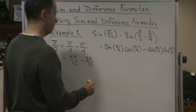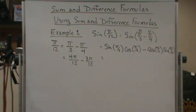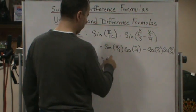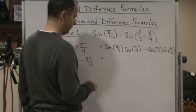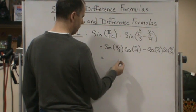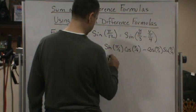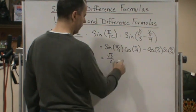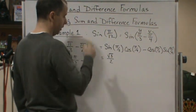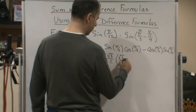And now, we know these. So we could just plug in the values and simplify. So the sine of pi over 3, which is 60 degrees, that's going to be the square root of 3 over 2. And then cosine of pi over 4, which is 45 degrees, that's going to be times the square root of 2 over 2.